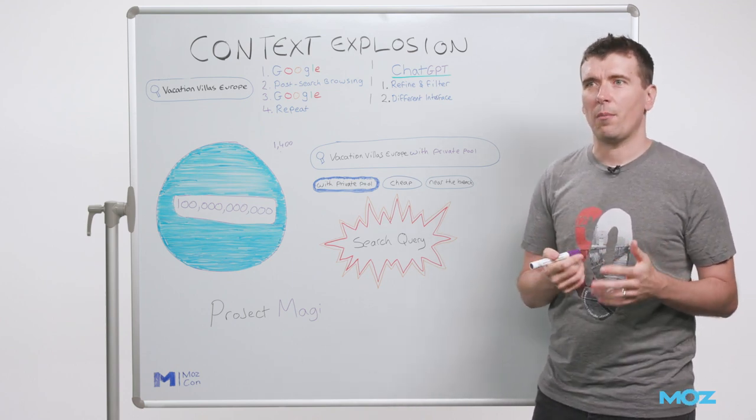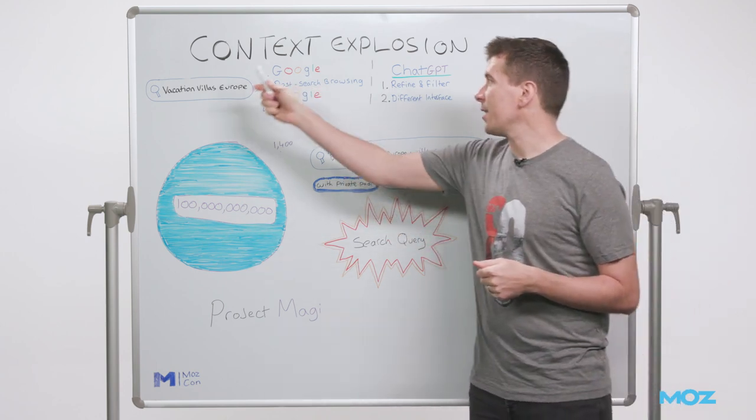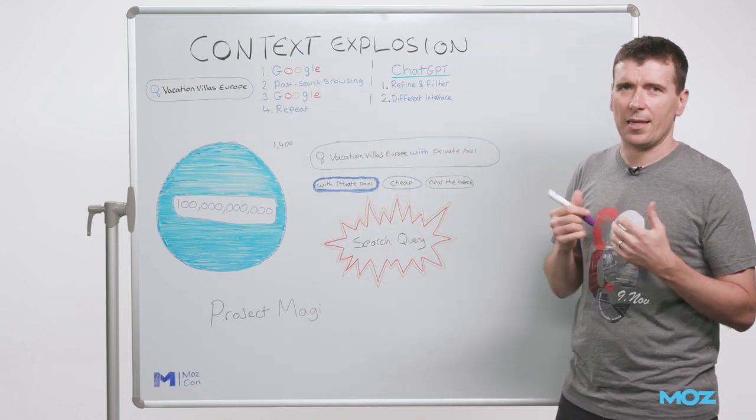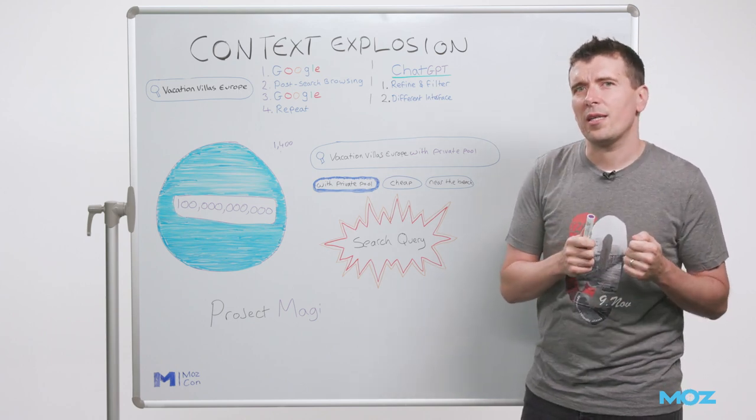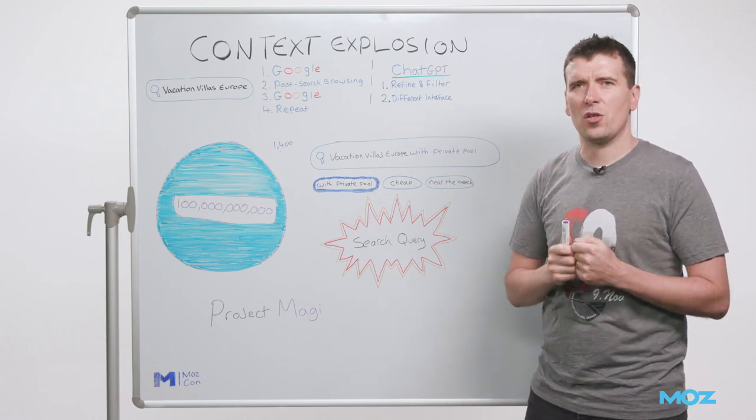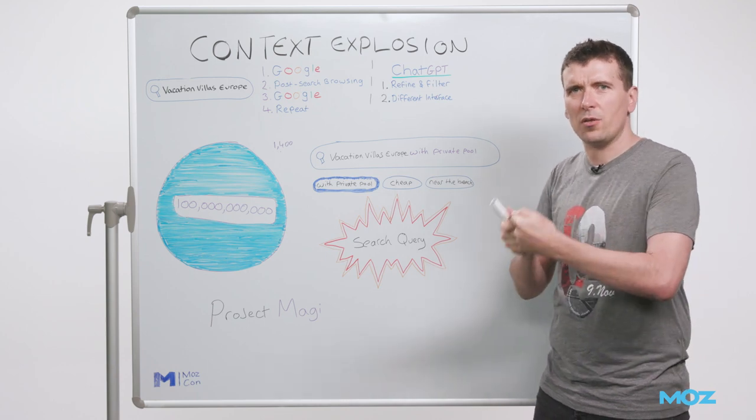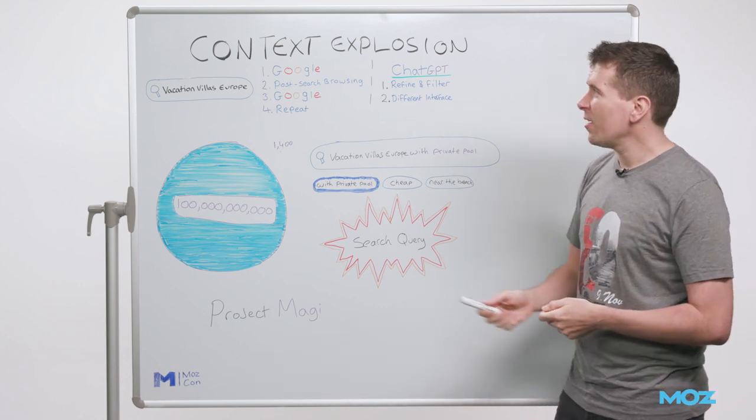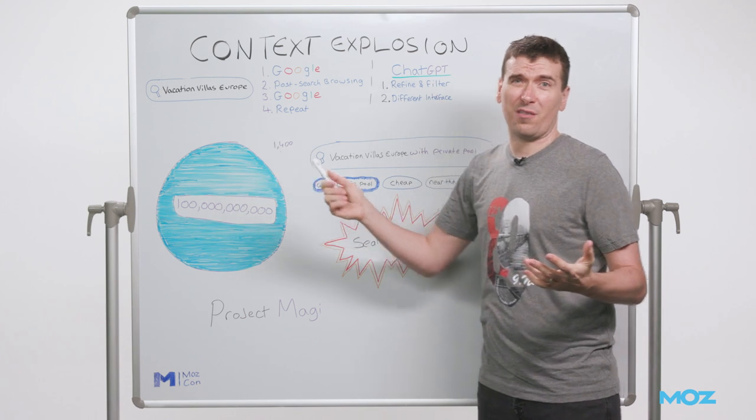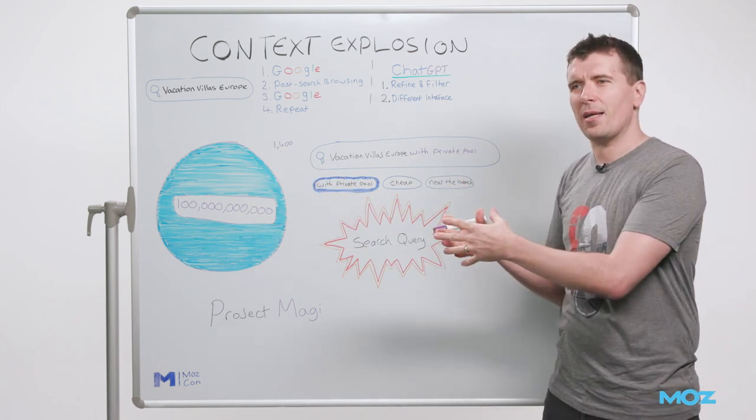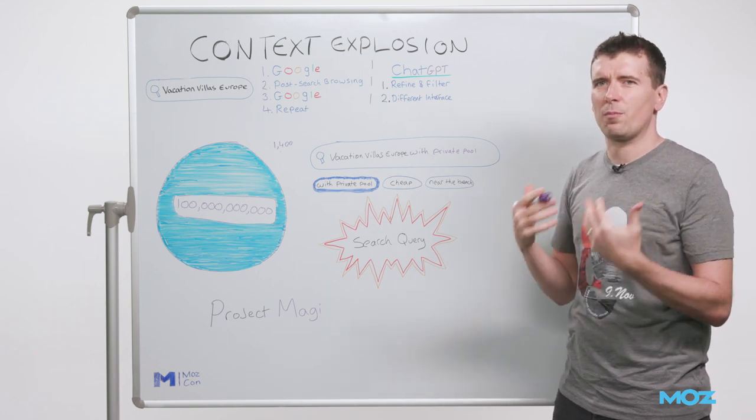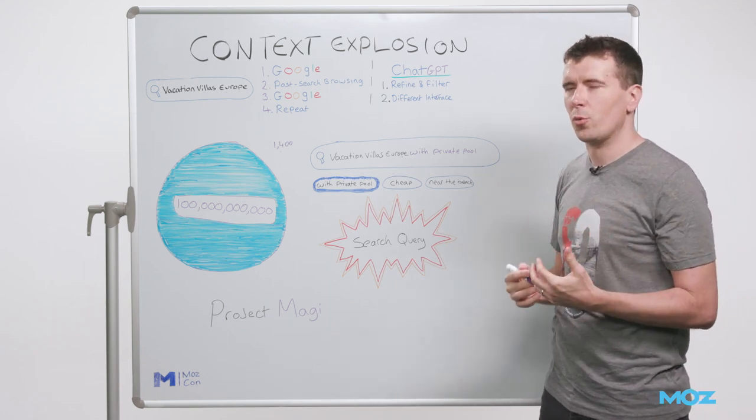And here, I think they were talking about basically anticipating the explicit context that we want to add to queries. And the reason that they might want to anticipate that is to find ways to incentivize us as searchers to add more explicit context to our searches when we've been trained over the last 25 years to type two to five keywords. But if they're going to have a GPT-powered backend, they need to incentivize us to add more explicit context into our search query.